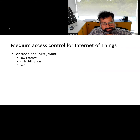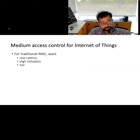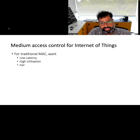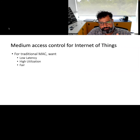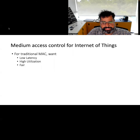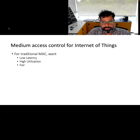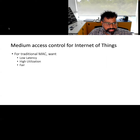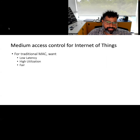In case of traditional MAC — medium access control for conventional wireless devices — what we want is low latency. Any device that wants to communicate can transmit without having to wait a long period of time to get access to the medium. Second, there should be high channel utilization, meaning there are no unoccupied periods where the channel is unused.